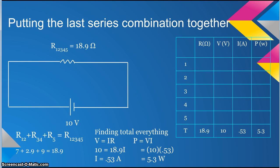We just found the total voltage, current, resistance, and power. All that is left is to find each part in each individual resistor.